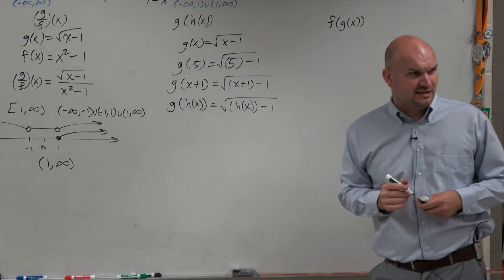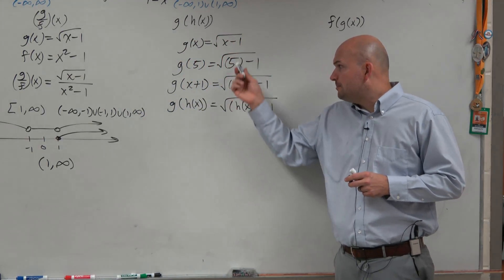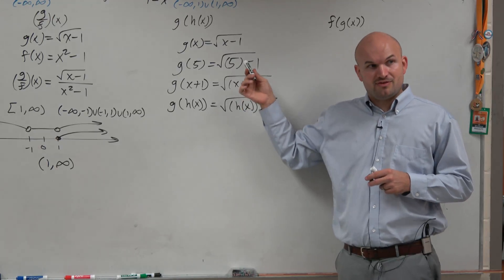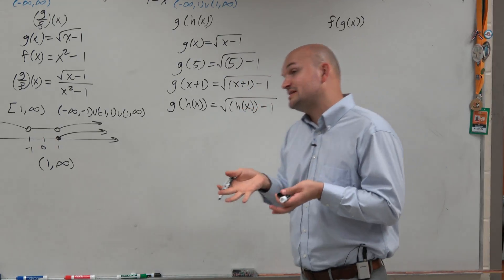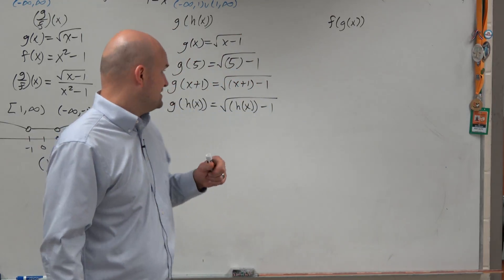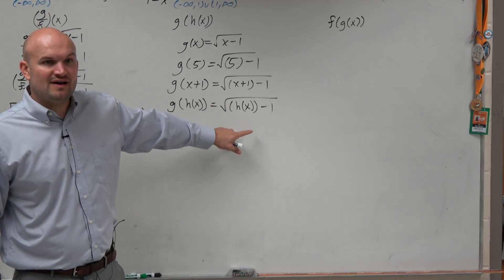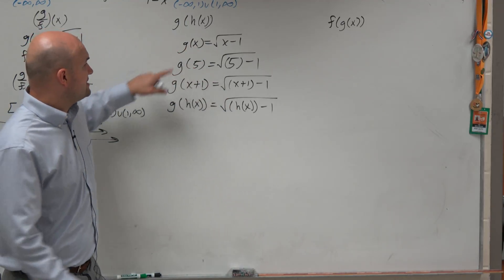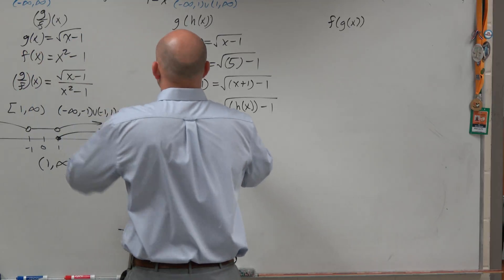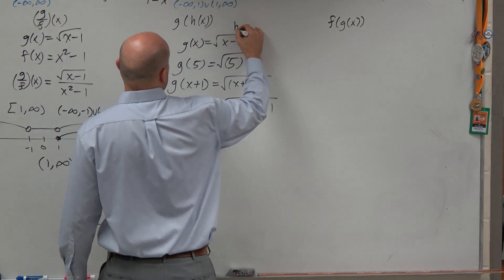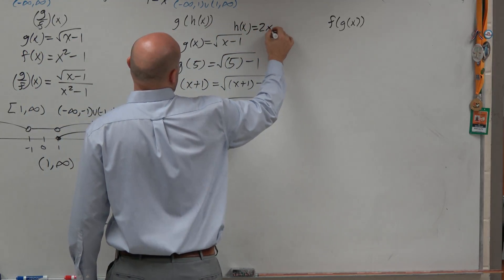I know it looks a lot more confusing than if I just gave you a number 5, but you guys can see it's the same thing. The only difference in this case though is we actually have a defined h of x. Because h of x in this case, as we've written in there, h of x is 2x minus 2.